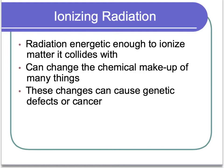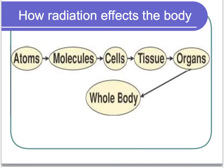These changes in humans can cause genetic defects or cancer. The way that radiation affects the body is actually kind of from the inside out. It starts with the smallest particles in your body — atoms — and then your molecules, then your cells, then your tissues, then your organs, and eventually it affects your whole body.